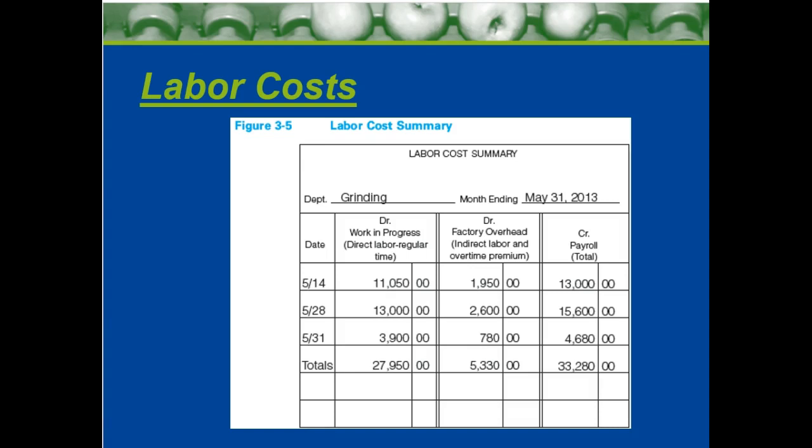Our labor — part of our labor cost summary, we have our debits and we have our credits. This is a basic spreadsheet of our debits and credits here. To increase our payroll within this context is to put it on the credit side, so we can see that our payroll is increasing. As our payroll is increasing, we can see the work in progress and factory overhead is also increasing on the debit side.